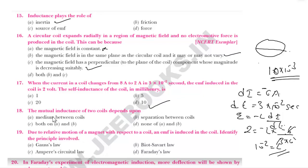The mutual inductance of two coils depends on the medium between the coils and the separation between the coils. So the answer is both A and B.